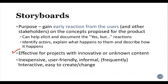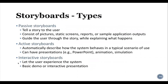Storyboards are very efficient for projects with innovative or even unknown content. They are widely used because they are inexpensive, user-friendly, informal, interactive, and easy to create and manage. There are three main types of storyboards used for early validation. The first is the passive storyboard, which tells a story to the user and mainly consists of pictures, static screens, reports, or sample application outputs, guiding the user through the story while explaining what is happening.